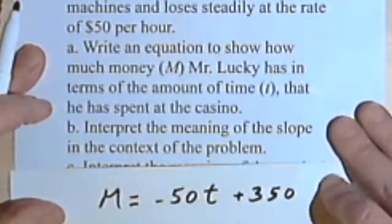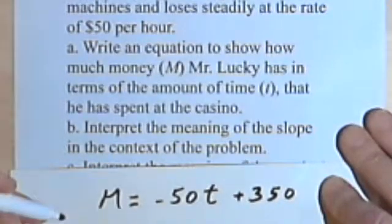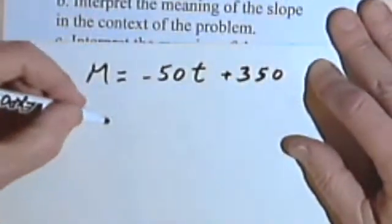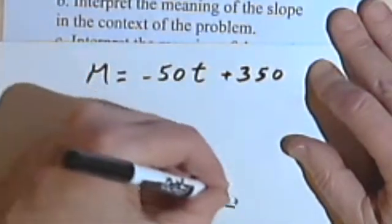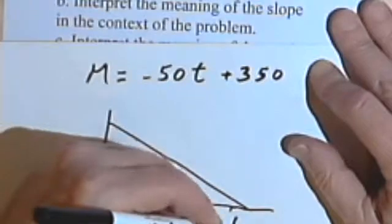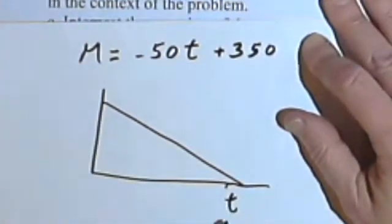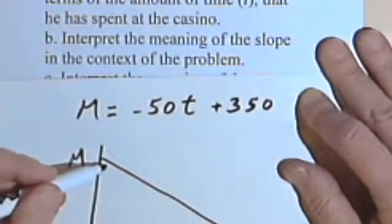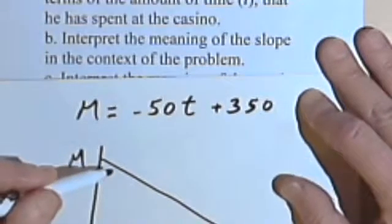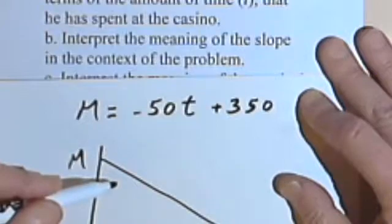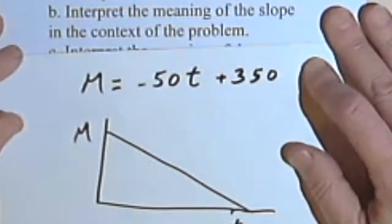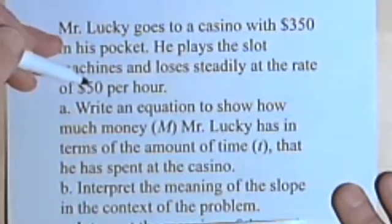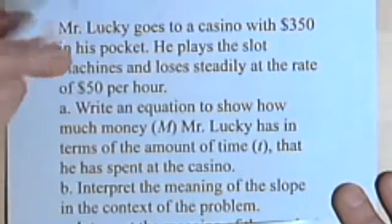Interpret the meaning of the slope in the context of the problem. Let's do a graph. This graph goes downhill because he has less and less money as time goes on. Time t is the independent variable, and m — the amount of money he has — is the dependent variable. The slope is negative 50, and the meaning is that every hour he has $50 less. He's losing steadily at the rate of $50 per hour. The slope is a rate of change.